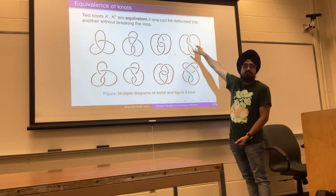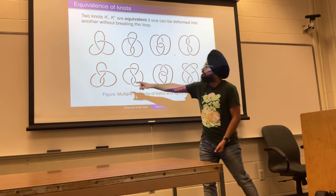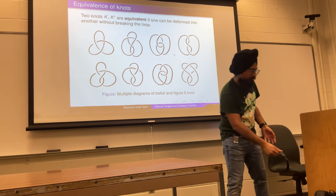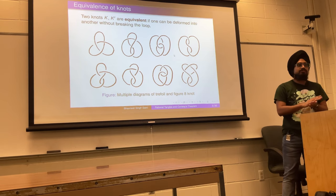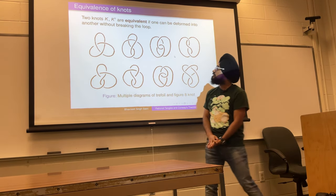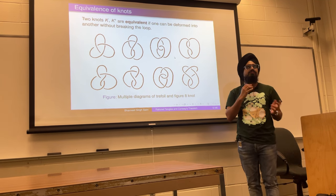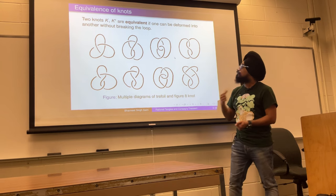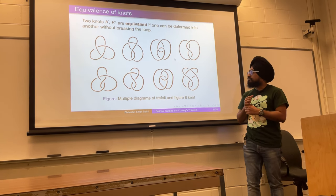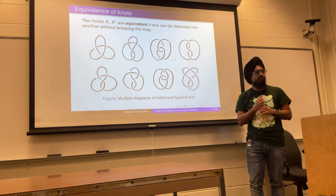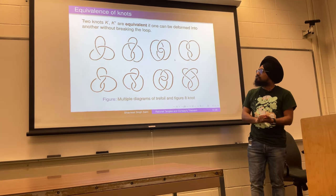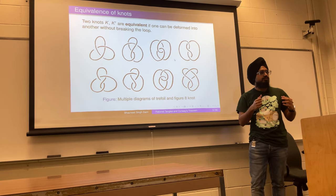A trefoil can be represented by various diagrams in 3D space; similarly the 4-crossing knot has multiple representations. This brings us to the question of equivalence of knots: when can we say two diagrams are equivalent? Two knots k and k' are equivalent if one can be deformed into the other without breaking the loop and without singularities — a fancy name for this is ambient isotopy.